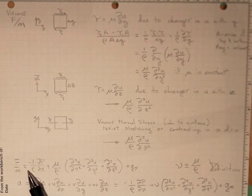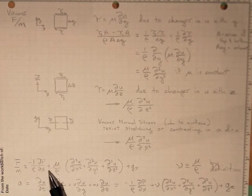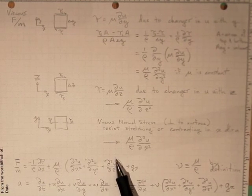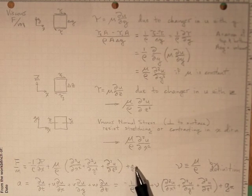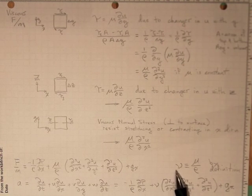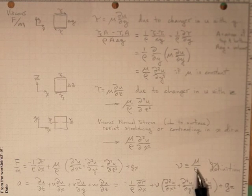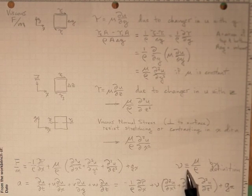Force per unit mass is negative 1 over rho di p di x plus mu over rho di 2u di x squared di 2u di y squared di 2u di z squared plus g of x. And the kinematic viscosity is just the ratio mu over rho. And that's true by definition. So there's why we have the three lines there.